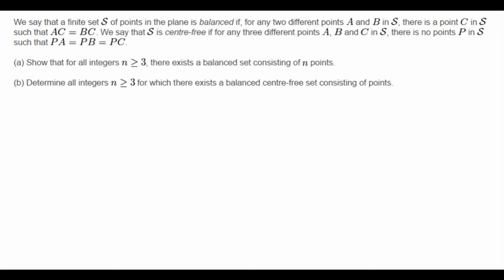You can pause the video and try the problem for yourself. Alright, let's begin. We'll solve part A first. Let's look at a small example: set N equals 3. A solution is simple enough — we just consider an equilateral triangle. For any two points in the equilateral triangle, the third point is obviously equidistant from those two points. So we're done for N equals 3.